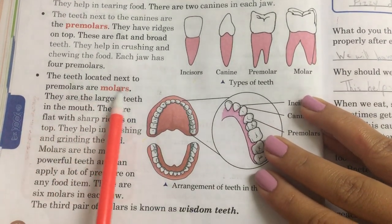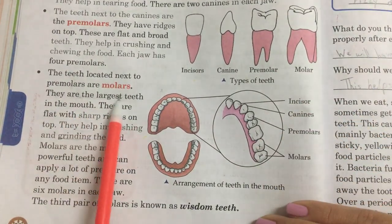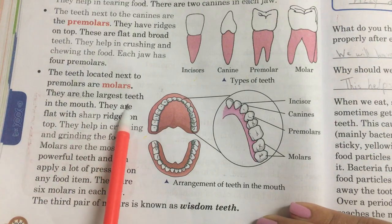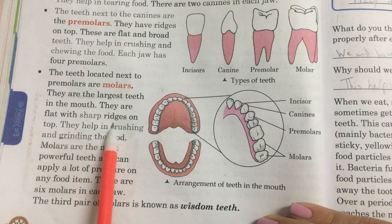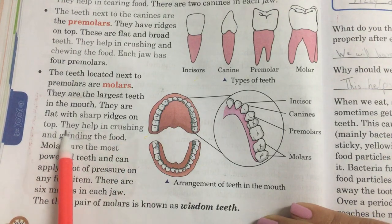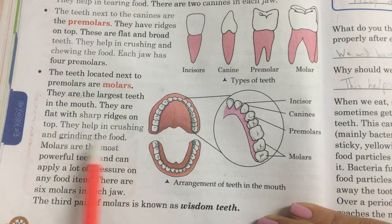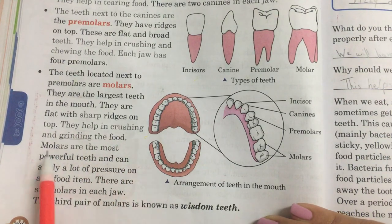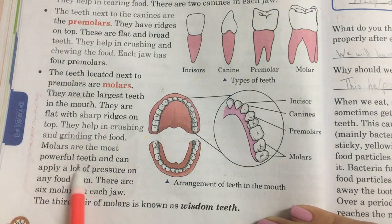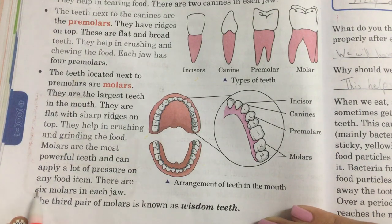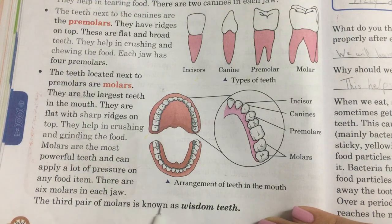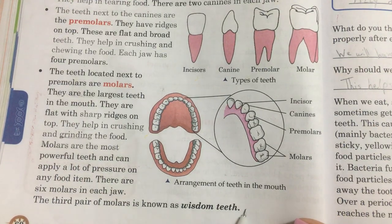The teeth located next to premolars are molars. They are the largest teeth in the mouth. They are flat with sharp ridges on top. They help in crushing and grinding the food. Molars are the most powerful teeth and can apply a lot of pressure on any food item. There are six molars in each jaw. The third pair of molars is known as wisdom teeth.